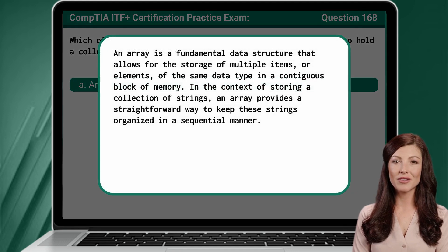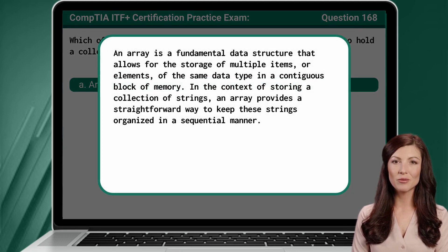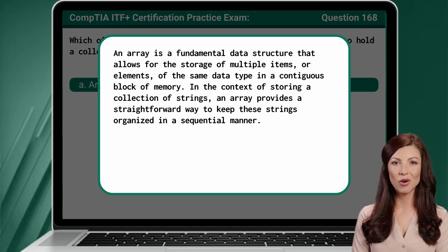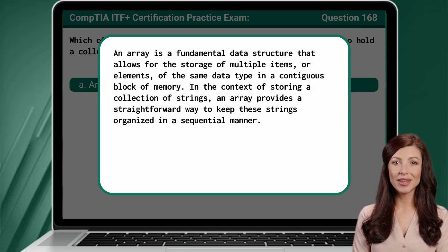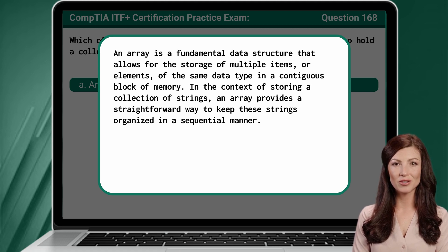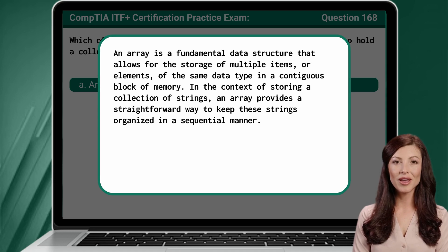An array is a fundamental data structure that allows for the storage of multiple items, or elements, of the same data type in a contiguous block of memory. In the context of storing a collection of strings, an array provides a straightforward way to keep these strings organized in a sequential manner.